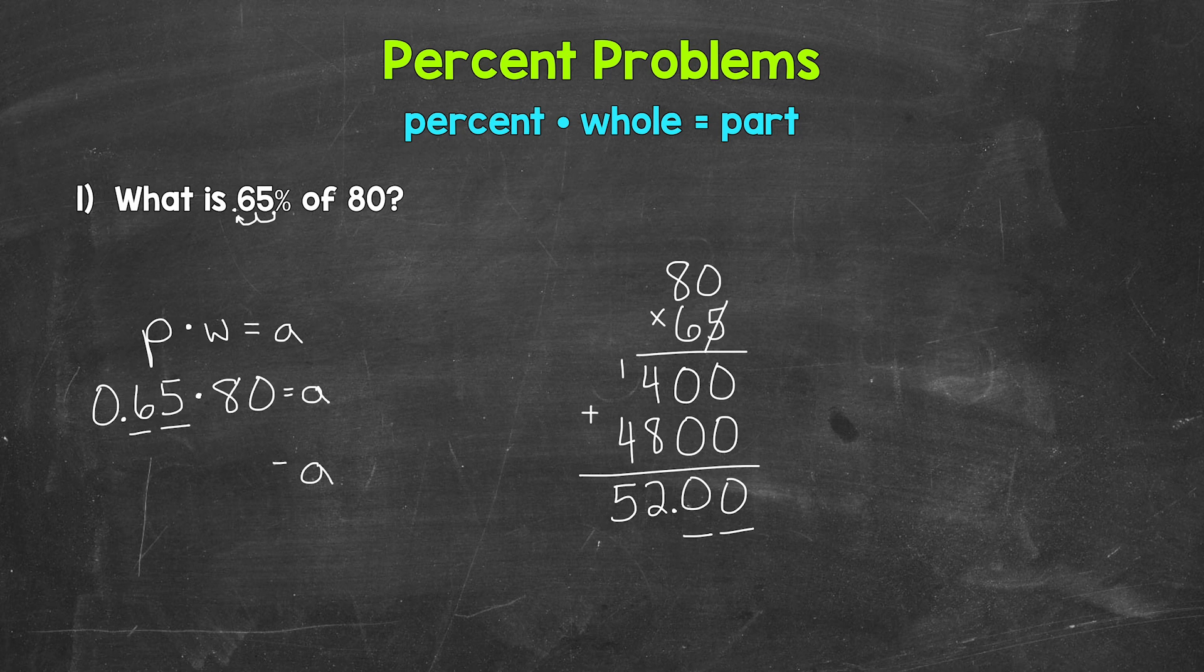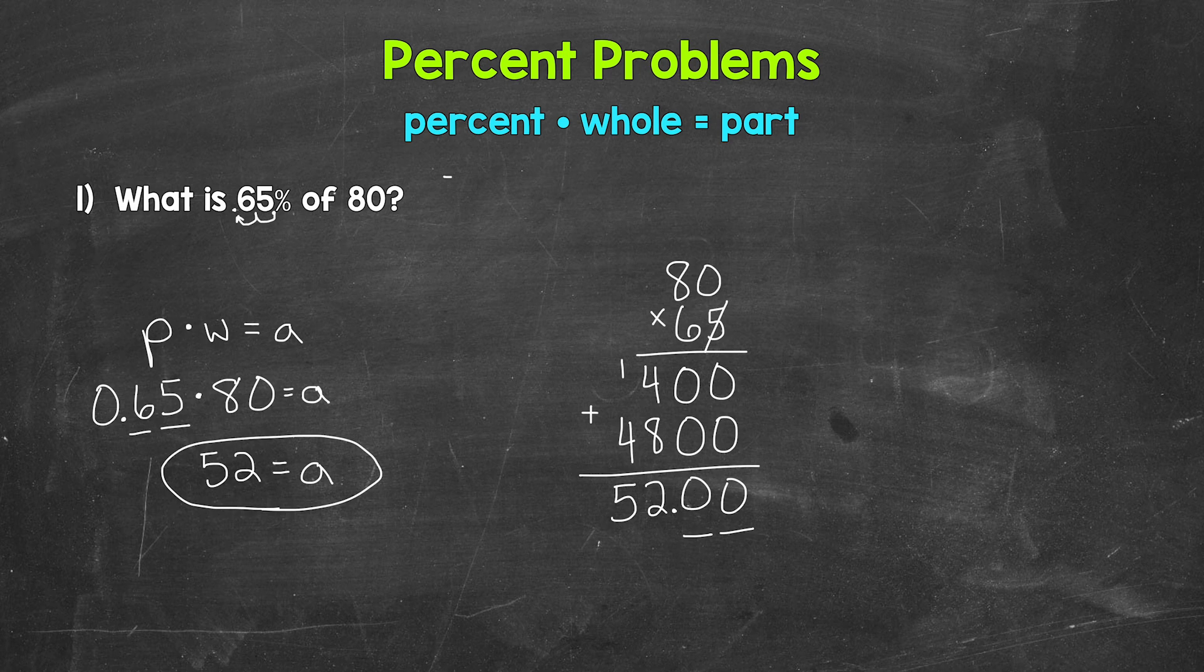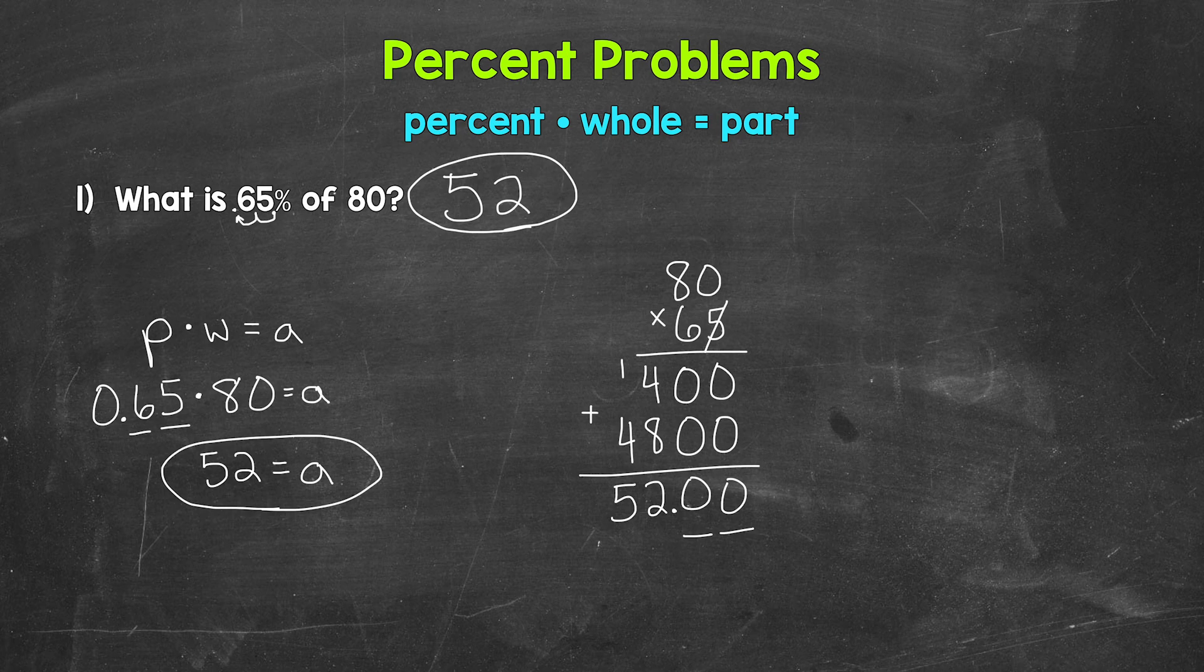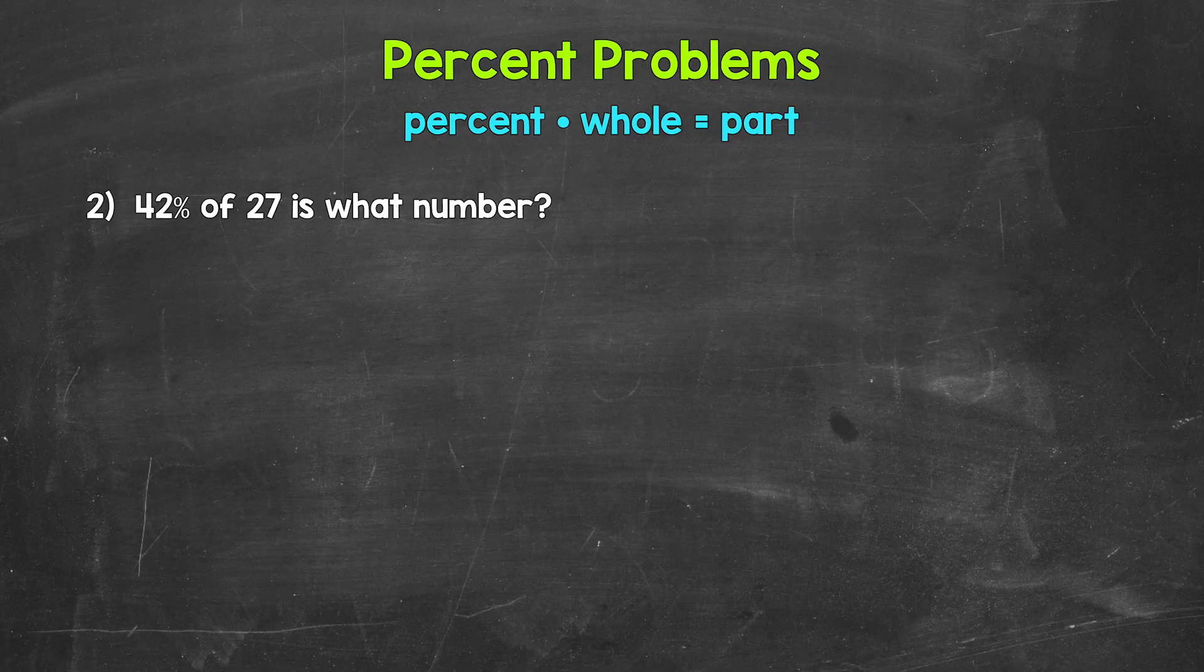So we can leave those zeros off. A equals 52. So 52 is 65% of 80. Let's move on to number 2.